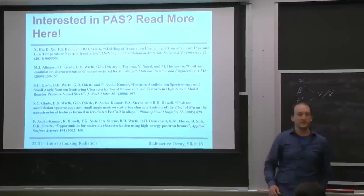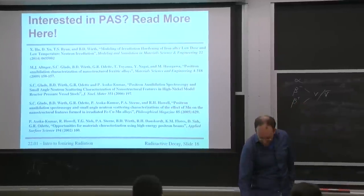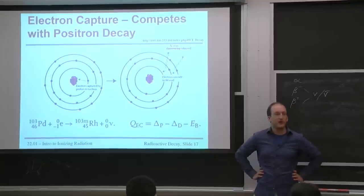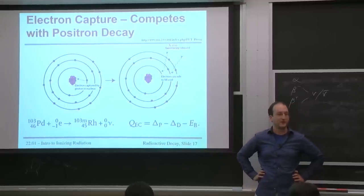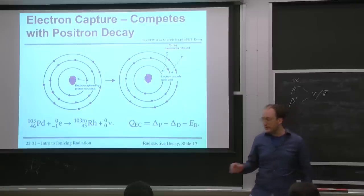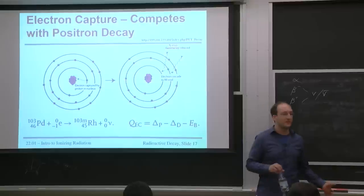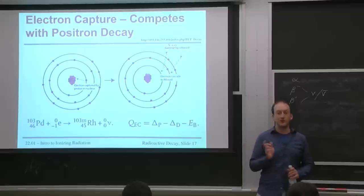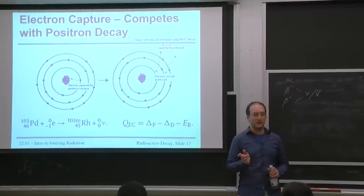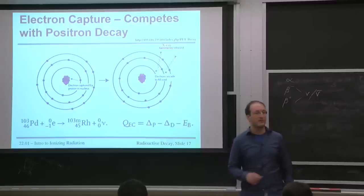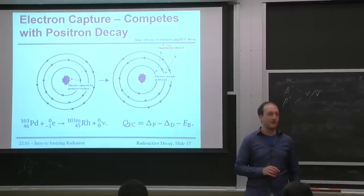We started talking about positron decay and the neutrinos that come out of that, and the Kamiokande detector set up with expensive phototubes to detect the cones of light as neutrinos pass faster than the speed of light in water. We made it up to positron annihilation spectroscopy — ways that you can use positron emission to look at the number and types of atomic defects in crystalline materials. I've posted pictures of the board from last time on the Stellar site. If you learn better by looking and listening rather than writing everything, feel free.